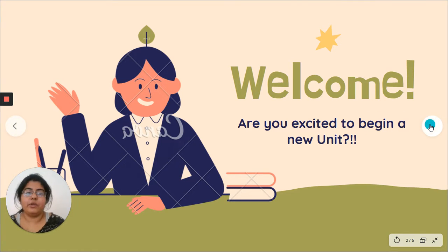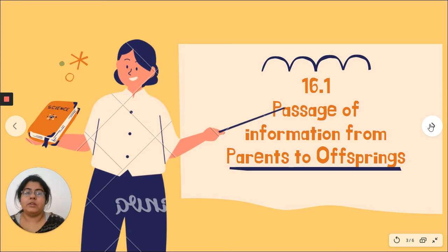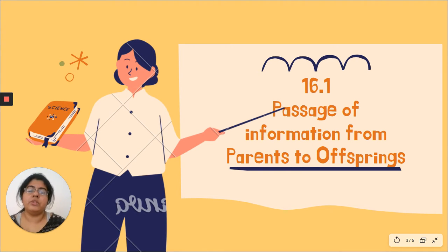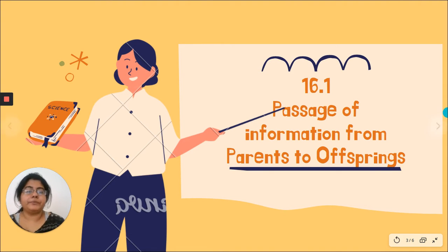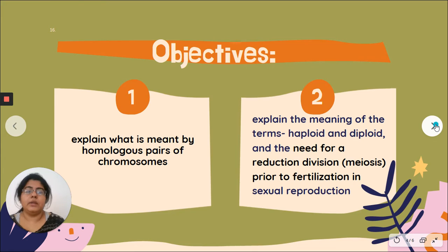We will be starting with a few important objectives. The whole unit is divided into two parts. The first part, 16.1, is all about getting the students used to some important terms and terminologies — all of them related to how information passes from one generation to another. The name of this part of the unit is called 'Passage of Information from Parents to Offsprings.' In this part, you're going to cover a few objectives.